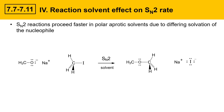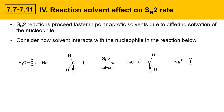SN2 reactions proceed faster in polar aprotic solvents due to the differing solvation of the nucleophile. We need to consider how solvent interacts with the nucleophile and how it will affect its nucleophilicity. The nucleophile in this case is the methoxide ion. The solvation of this species is really critical for determining how well it's able to come in and attack the alkyl halide.